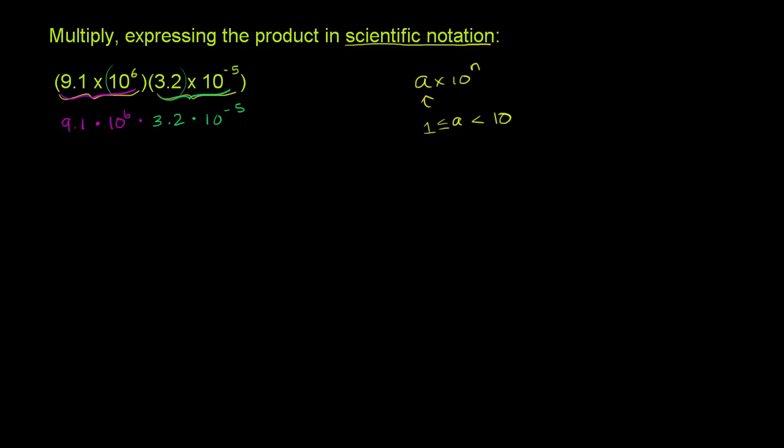So I'm just going to rearrange this using the commutative property. So this is the same thing as 9.1 times 3.2. And I'm going to reassociate, so I'm going to do these first. And then that times 10 to the sixth times 10 to the negative five. Times 10 to the negative five.